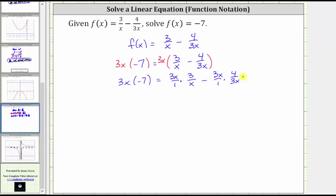And now let's determine each product. On the left, 3x times -7 is -21x equals, on the right side, before multiplying, notice how there's a common factor of x between the numerator and denominator. x divided by x simplifies to 1. We now just have 3 times 3, which is 9.